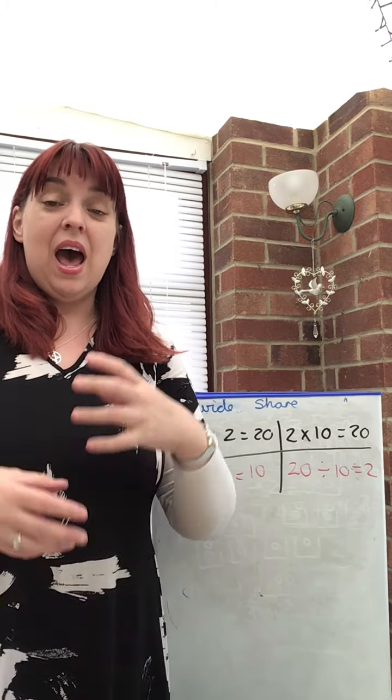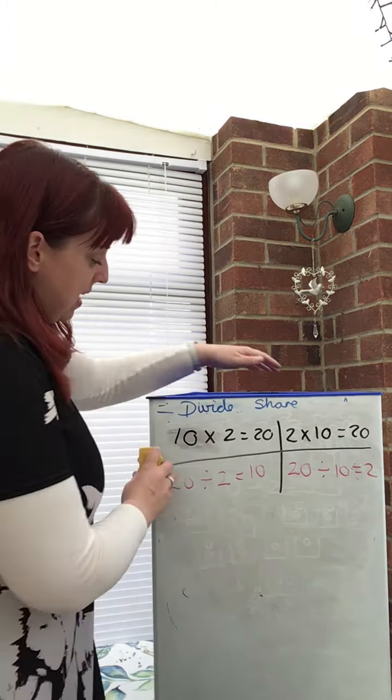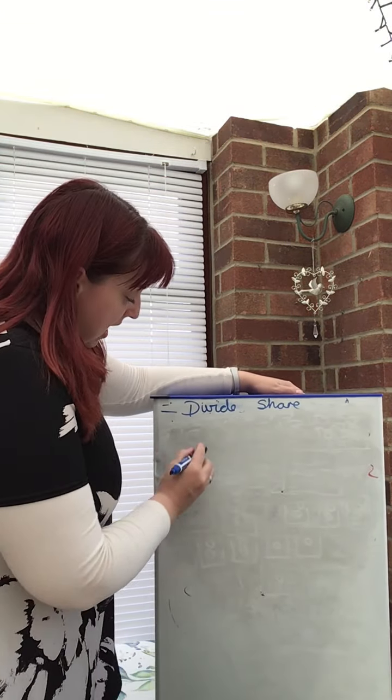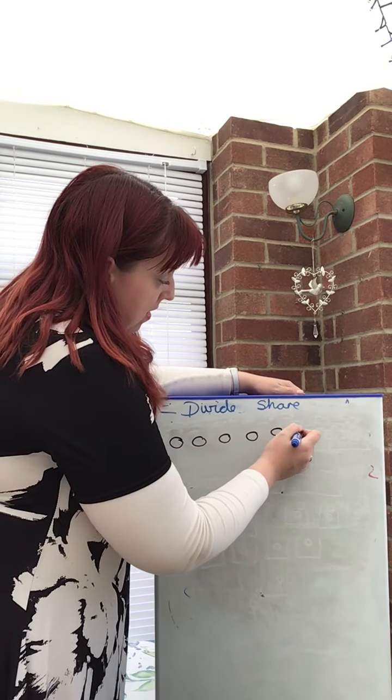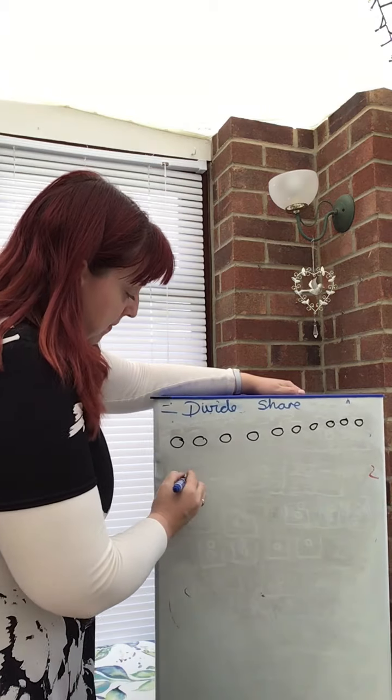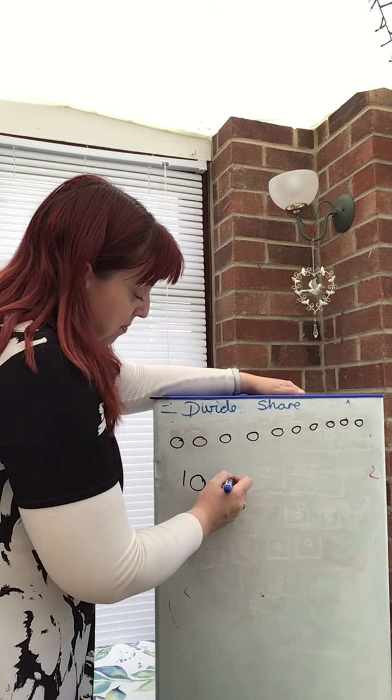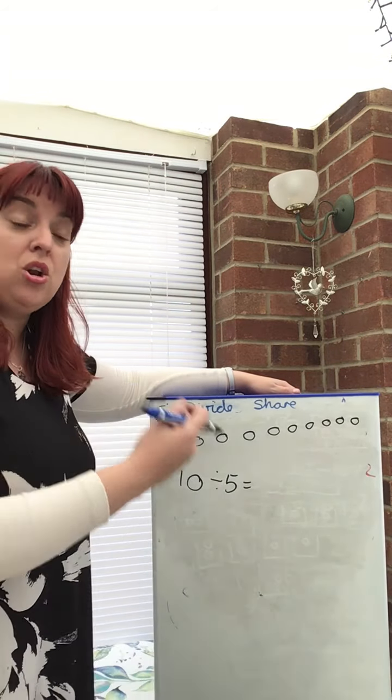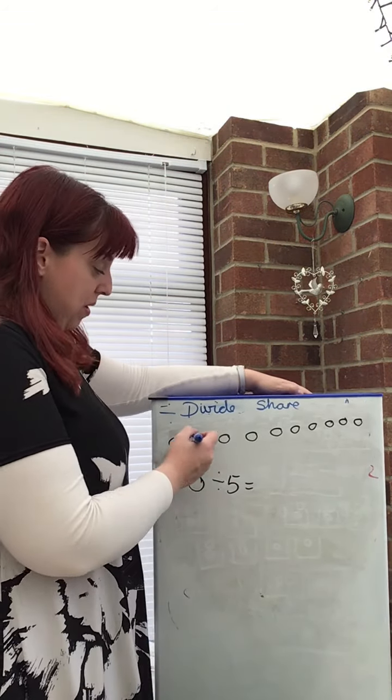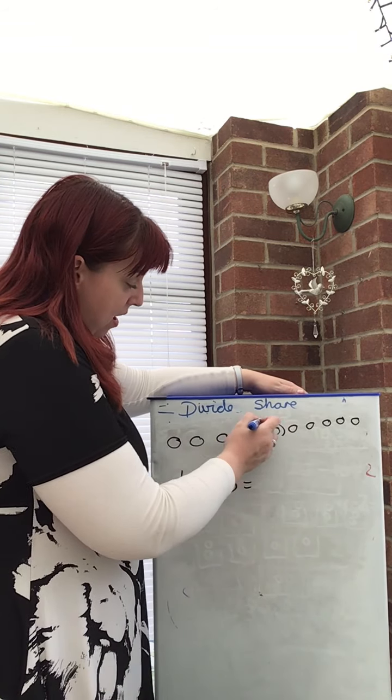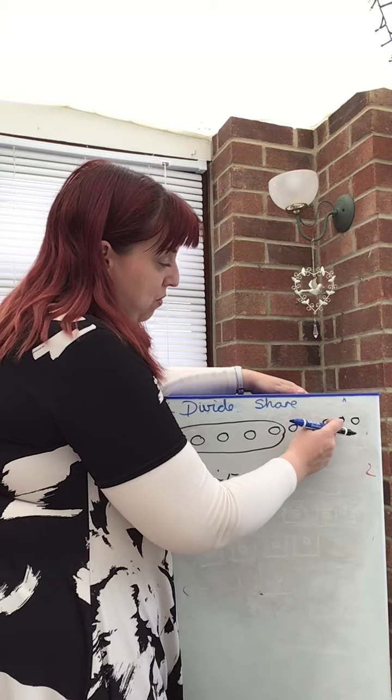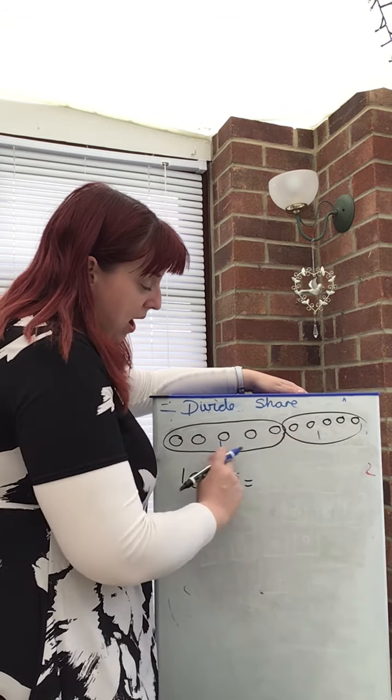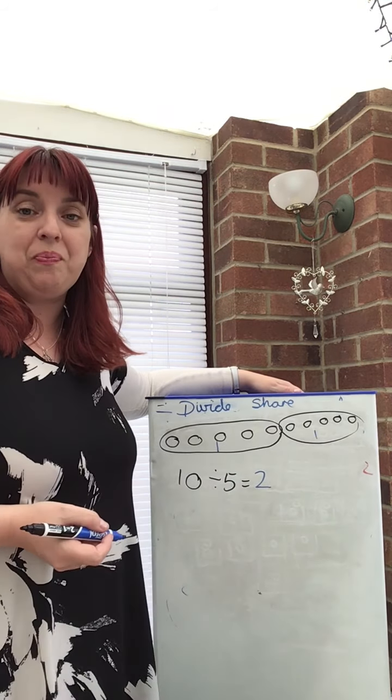Now, I can also draw this with pictures as well. So, effectively making it into some sort of array. So, for example, here I have my ten objects. I want to see ten divided by, shared into groups of five. How many groups will that be? How many lots of five will there be in a group? So, I'm going to count one, two, three, four, five. I'm going to put them into a group or a bag. One, two, three, four, five. Count how many groups? One and a one. Two groups in total.